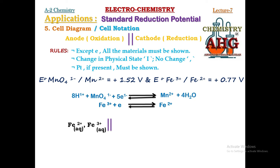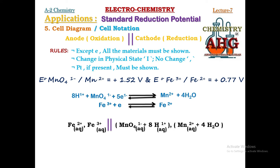For the cathodic half-cell, we write every substance except electrons. Since MnO₄⁻ is undergoing reduction, we start from MnO₄⁻ plus 8H⁺, which becomes Mn²⁺ plus 4H₂O. MnO₄⁻ and Mn²⁺ are in the same physical state, so we use a comma. Since both half-cells contain the same element in two different oxidation states, platinum is used — written before the anode and after the cathode.